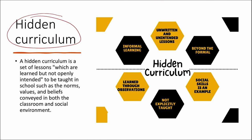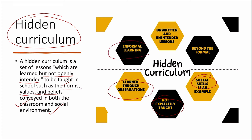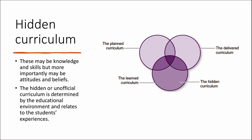What is meant by the hidden curriculum? A hidden curriculum is a set of lessons which are learned but not openly intended to be taught in school. This hidden curriculum can be in norms, values, and beliefs conveyed in both the classroom and the social environment. It is usually not explicitly taught — it is learned through observations, a kind of informal learning. Unwritten and unintended lessons exist beyond the formal curriculum. Hidden curriculum may be knowledge or a skill, but more importantly it can be an attitude or belief, determined by the educational environment and related to the student's experience.